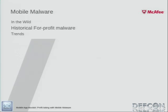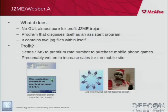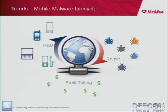Let's take a quick look at historical for-profit malware. The first one was pretty much Java Red Browser A, which was a fake web browser. It pretended to be a web browser that let you browse the internet cheaper than a data plan via SMS. It didn't do that - it just sent out a bunch of messages to Russian SMS premium rate services. It was followed quickly by Wesber, which didn't even try the techniques used by Red Browser. Those were the first ones, about four or five years ago.